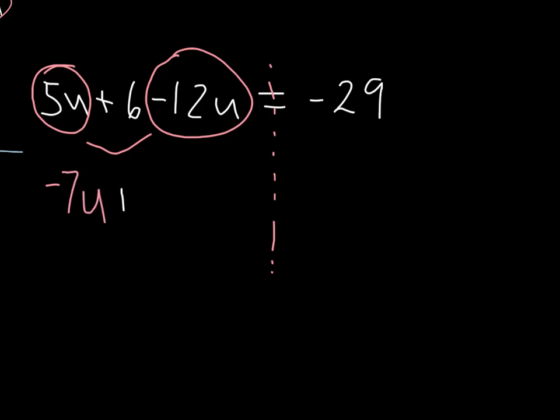So I have plus 6, bring down the equal sign, negative 29. Okay, so there's no more like terms, there's no u terms and no number terms to combine on this left side over here. Now I'm going to go ahead and start solving this equation.